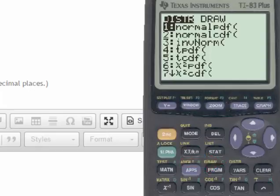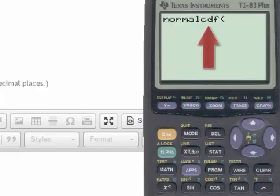This time, we're not going to go to draw, but instead we're going to go to number 2, which is the normal cumulative density function, or normal CDF. And by either going to the number 2 and hitting enter, or hitting the number 2 on the keyboard, we'll put in the normal cumulative density function.